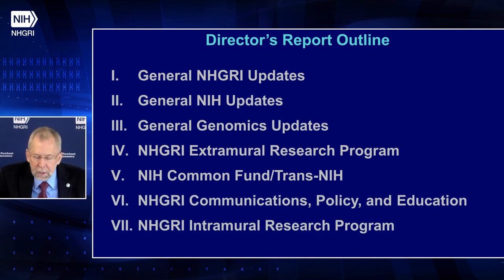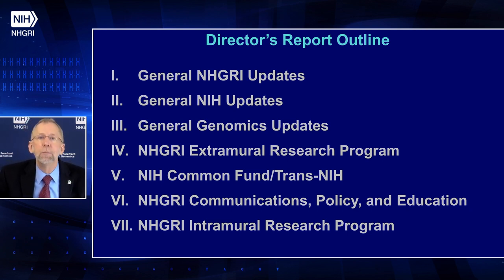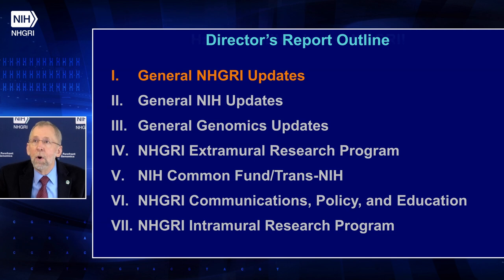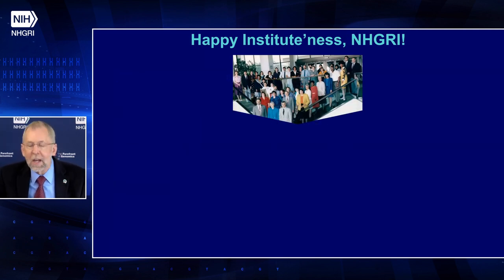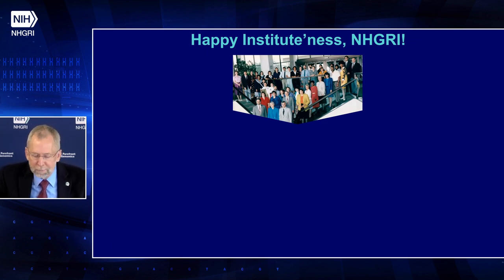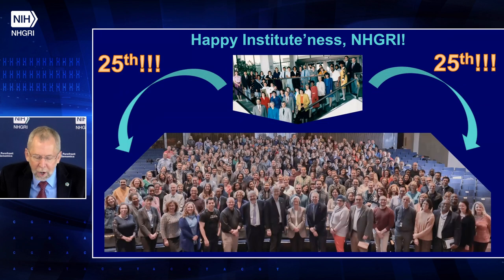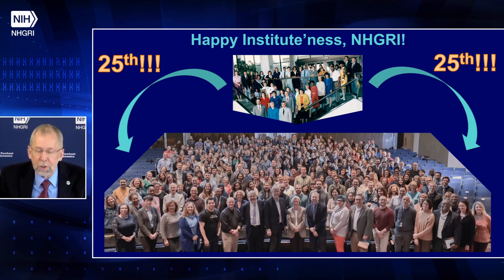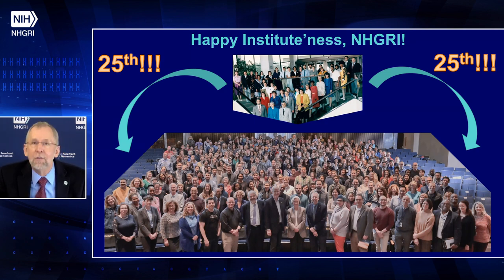Here are the seven major areas I'm going to cover in my director's report. I'll start with some general NHGRI updates. Last month, NHGRI celebrated something we regard as a birthday. On January 14, 1997, NHGRI was promoted from being an NIH center — the National Center for Human Genome Research — to being an NIH institute, the National Human Genome Research Institute. That means last month, on January 14, we celebrated our 25th year as an institute. Happy quarter century of instituteness to all of us.